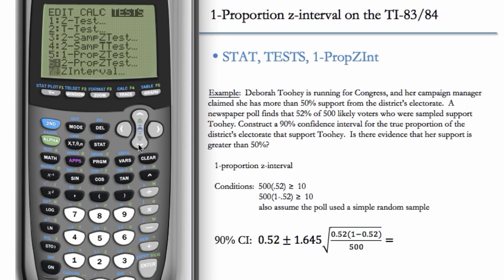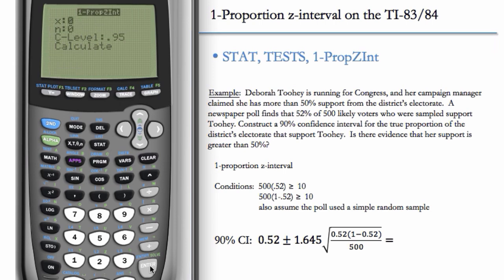Be careful not to use Z interval. Whenever we're working with proportions, we need the word 'prop' in the name of the test. So we want 1-PropZInt, which is A here. Hit enter.